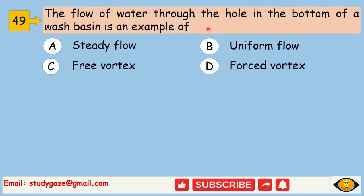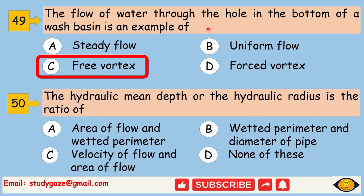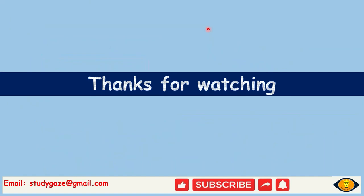The flow of water through the hole in the bottom of a wash basin is an example of free vortex. The hydraulic mean depth or the hydraulic radius is the ratio of area of flow and wetted perimeter. Thank you very much friends for watching this video.